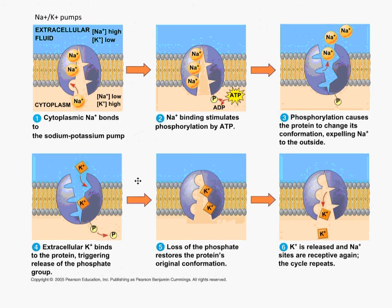Another concept we need to cover before talking about how the nerve impulse works is the sodium-potassium pump — this is not two separate structures, it's one structure. It pumps sodium out of the cell and potassium into the cell. Because we use the word pump, we're talking about active transport. What this does is establish the resting potential. After the nerve has fired, this resting potential is going to be reestablished by the sodium-potassium pumps, and this requires ATP.